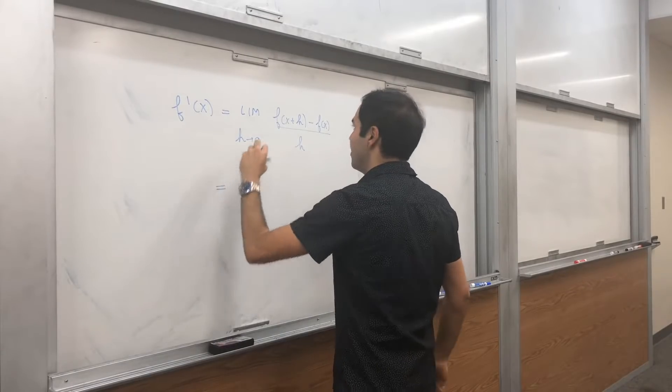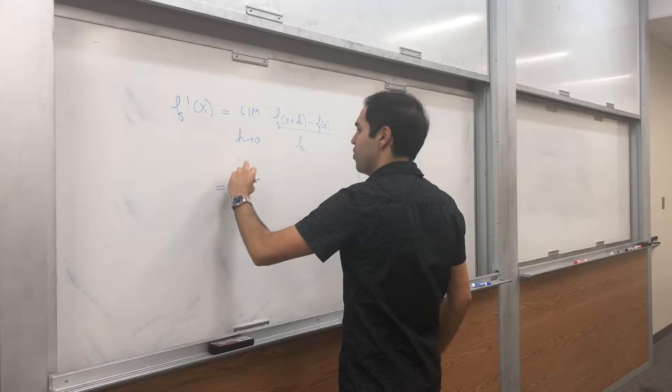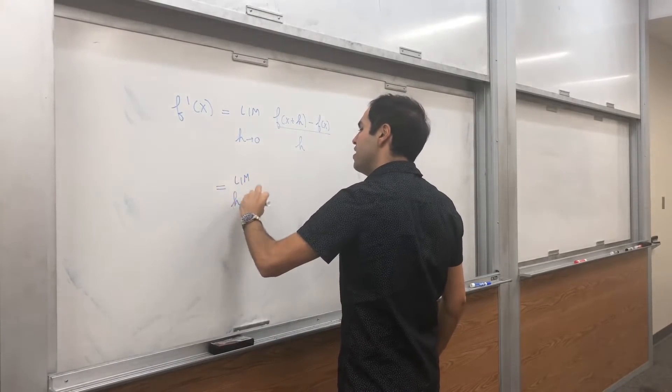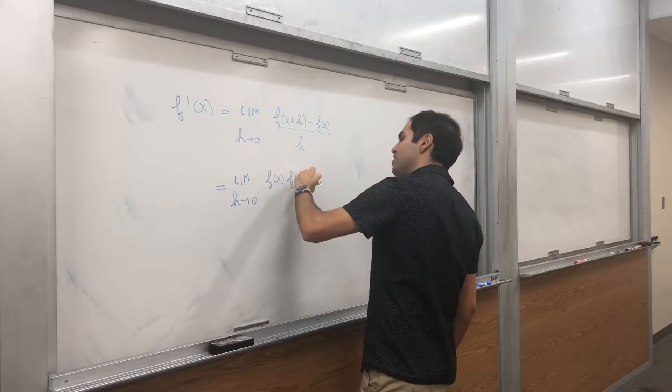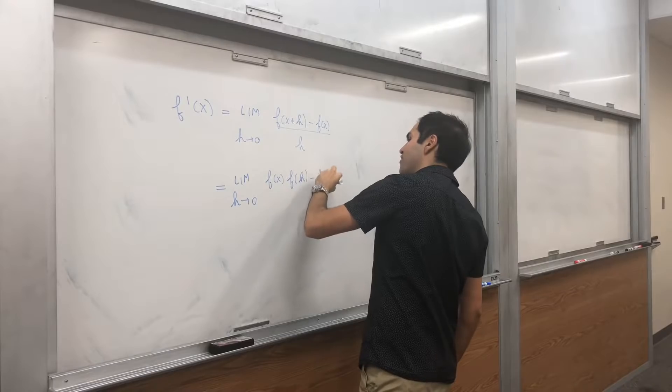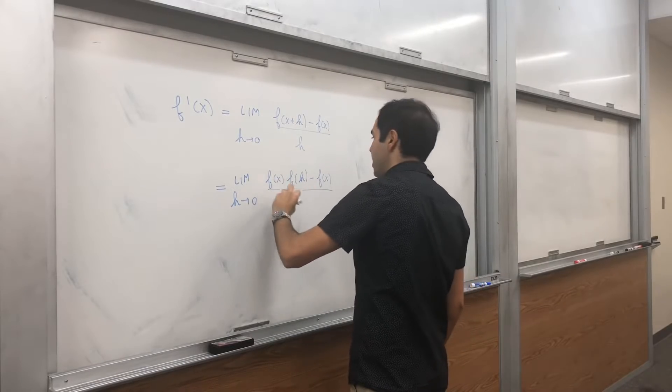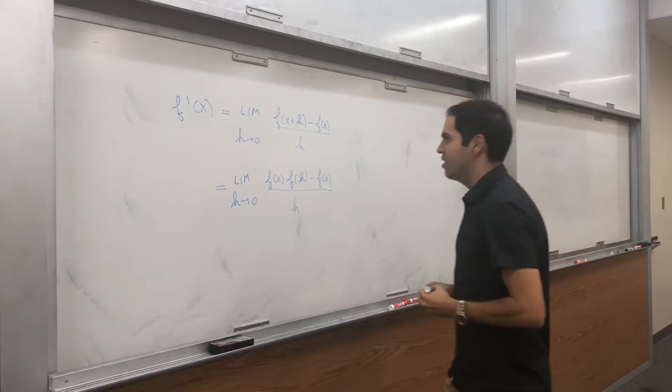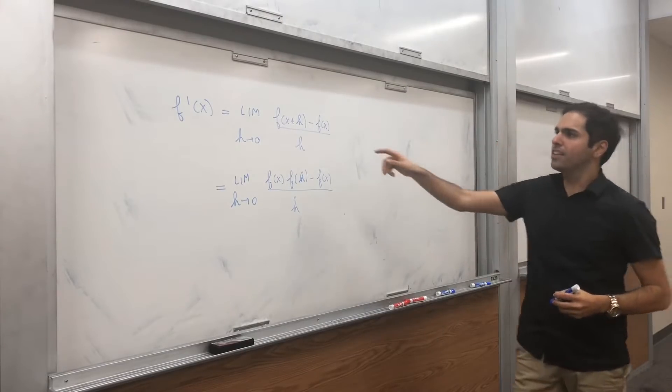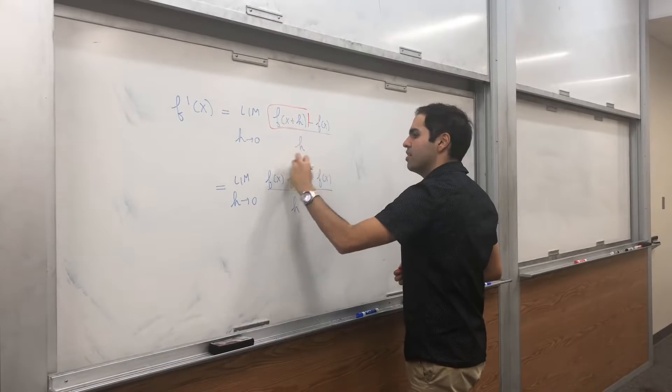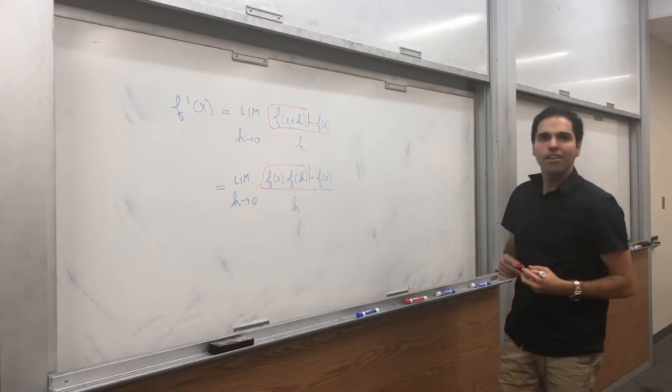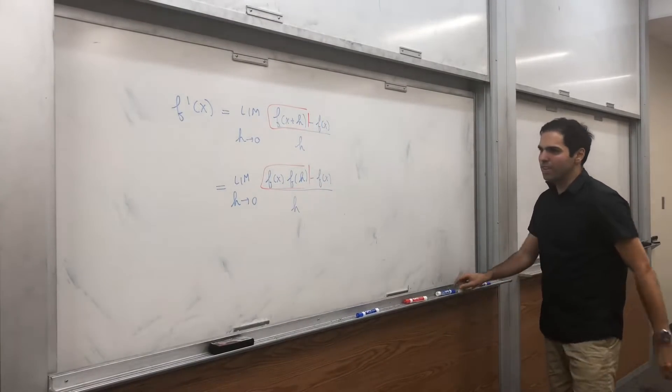Then this equals to, so now let's use our property, limit h goes to 0 of f of x times f of h minus f of x over h. I just used the fact that f of x plus h is f of x times f of h by our formula with y equals to h.